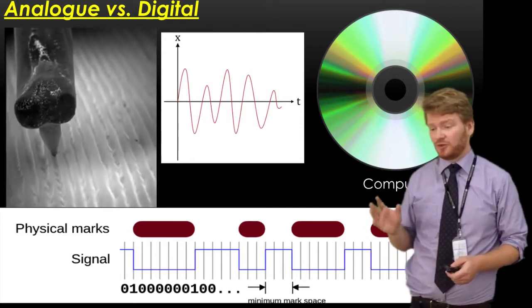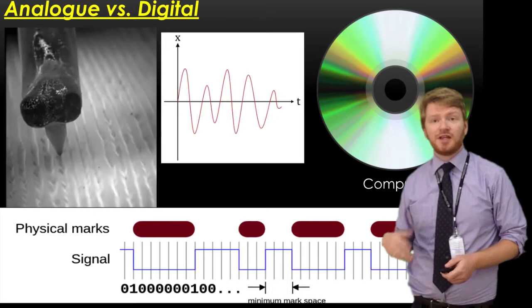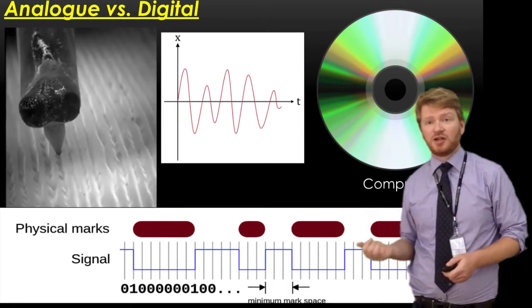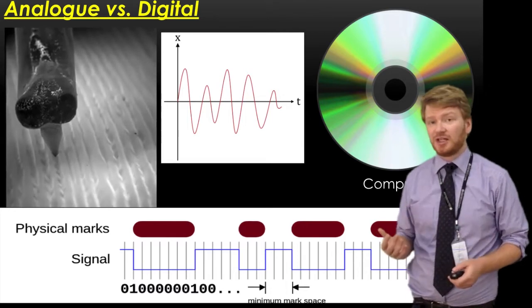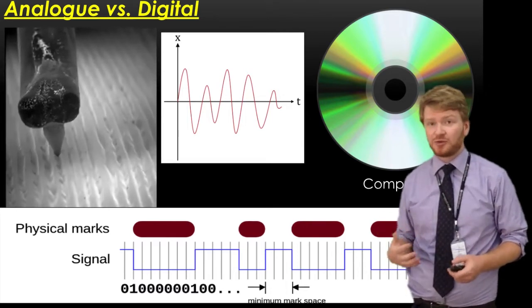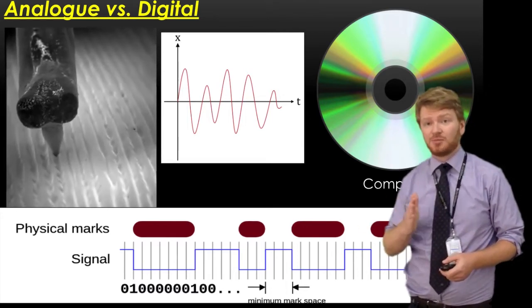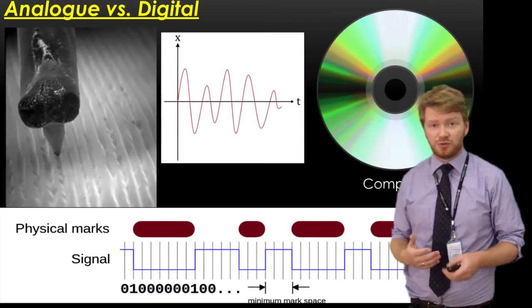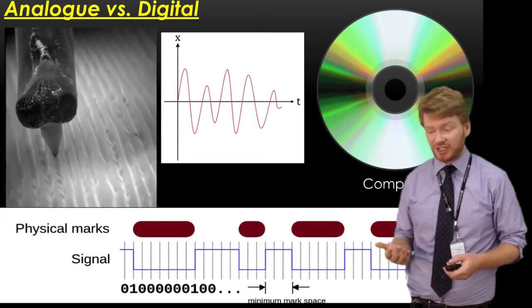In the centre diagram you can see a wave. That's an analogue wave where position is varying in time. Usually if we're thinking about sound, it'll be the position of a diaphragm in a microphone which is converted into a voltage, giving us the compressions and refractions.